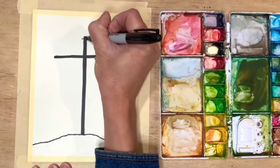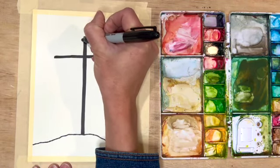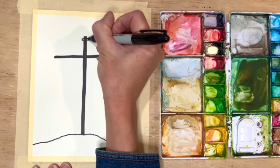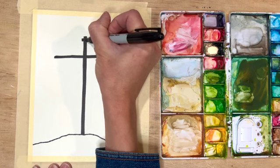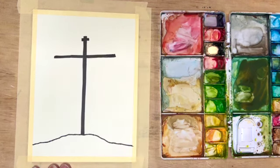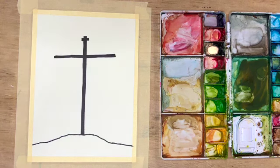If you want to you can also add a little rectangle on the top for the little sign that says that this is Jesus the King of the Jews. So that's an optional step. I decided to add that to the top of mine.